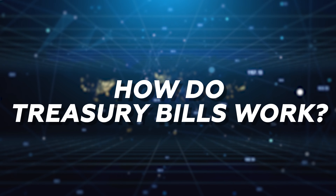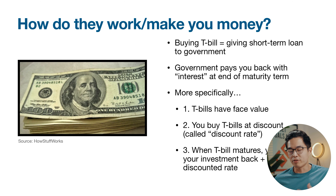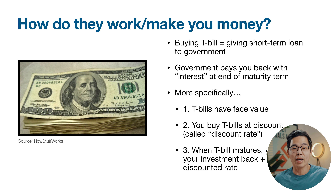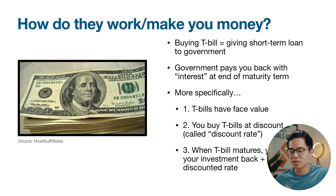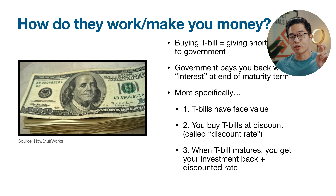Now let's talk about how T-bills actually work and how they can make you some money. When you buy a T-bill, you are basically giving a short-term loan to the government. The government uses that money and pays you back with interest at the end of the maturity term. More specifically, T-bills have a face value. You buy T-bills at a discount — this is called the discount rate — and when the T-bill matures, you get your investment back plus the discounted rate as your return.